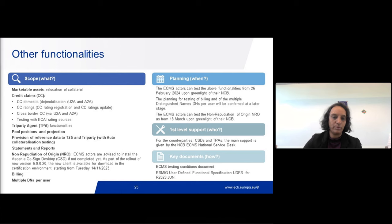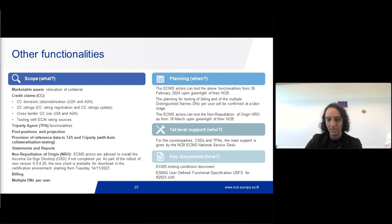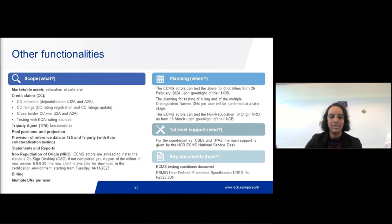The last point, also mentioned by Bobby, is the NRO — non-repudiation of origin — on the GoSign Desktop. We really advise the community to install the latest software. This new version client is available for you to download, and the link is in the Testing Conditions document. We advise the community to install this new version now. The NRO testing is planned to start from the 18th of March 2024.